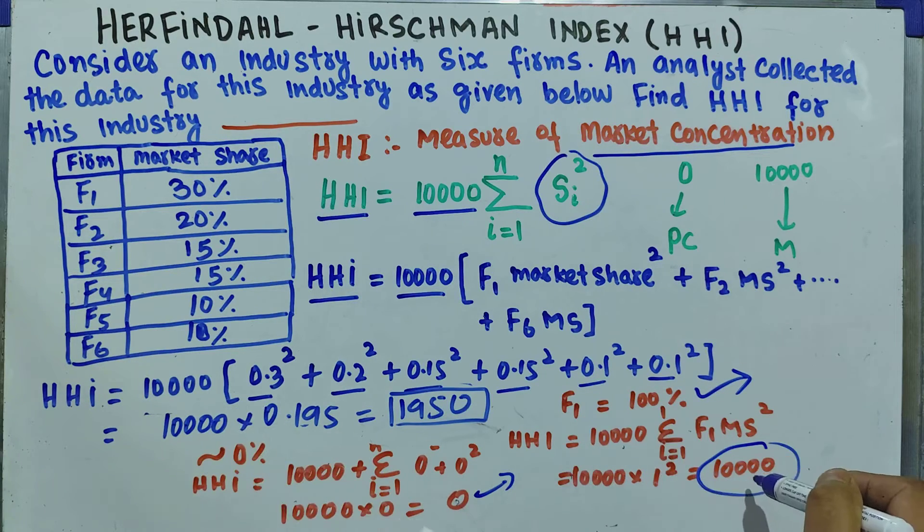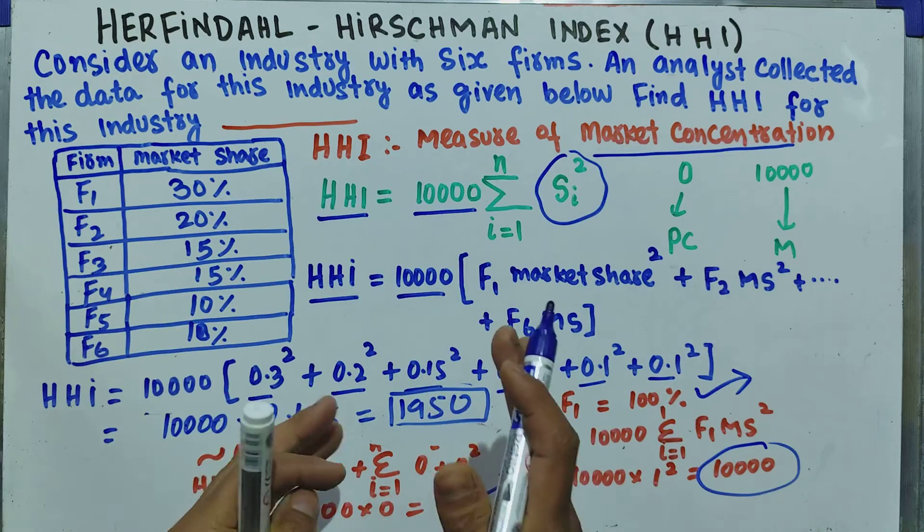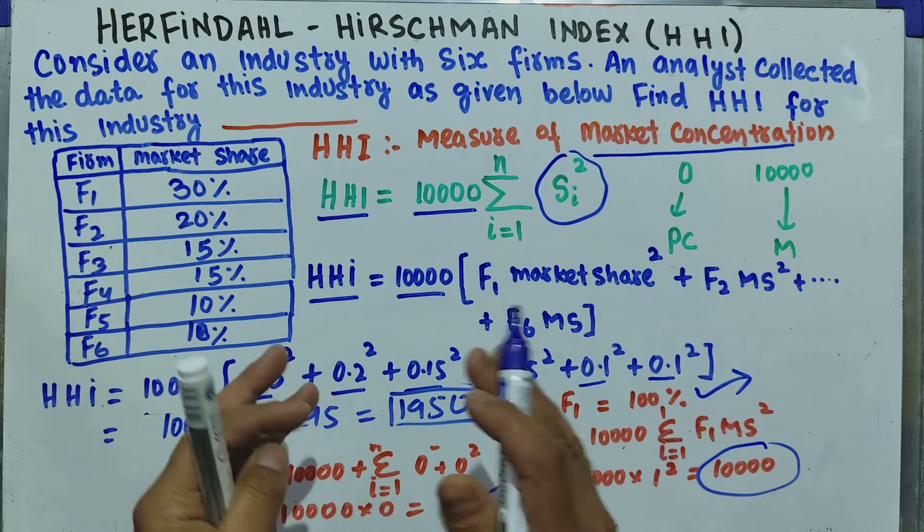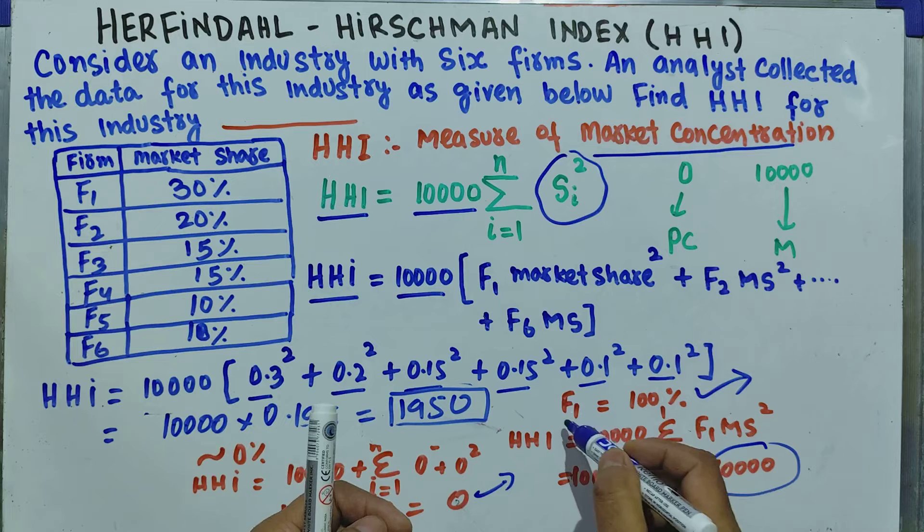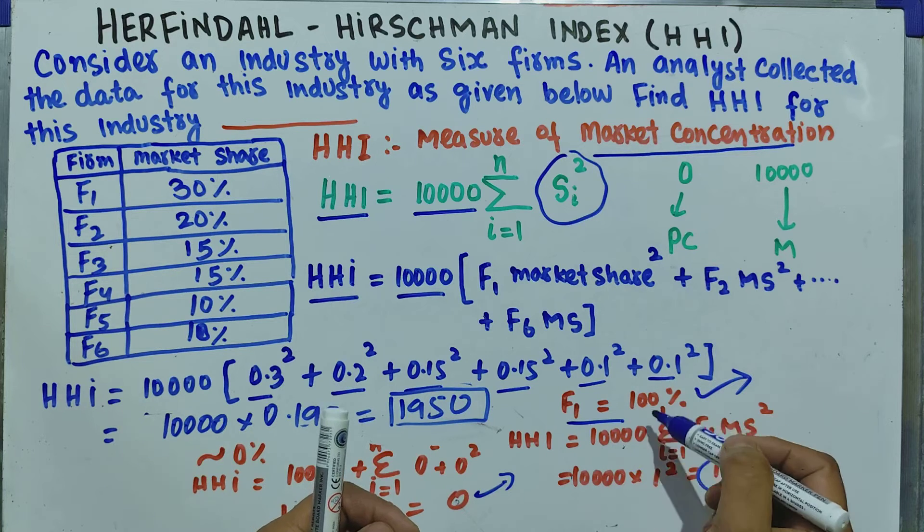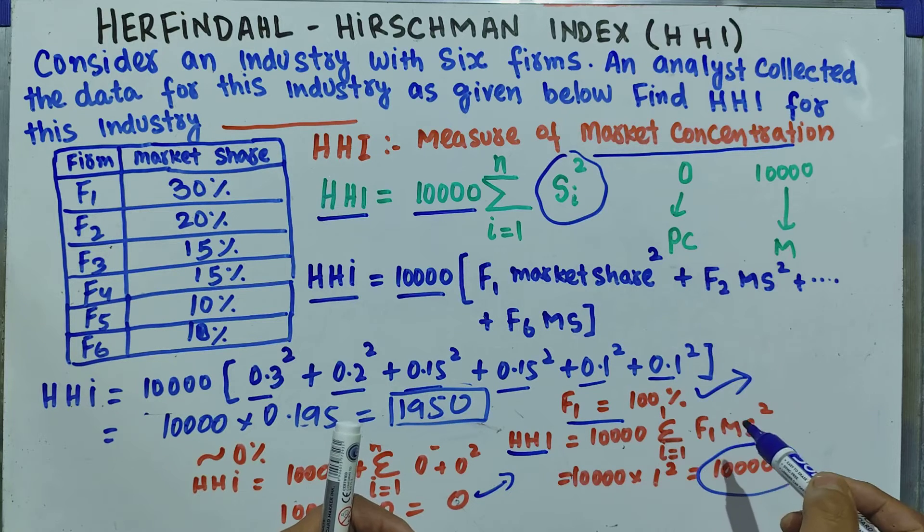HHI indicates: the closer a market is to a monopoly, the higher the concentration and the lower its competition. If we have only one firm, it is sharing the total market 100%, so HHI will equal 10,000.